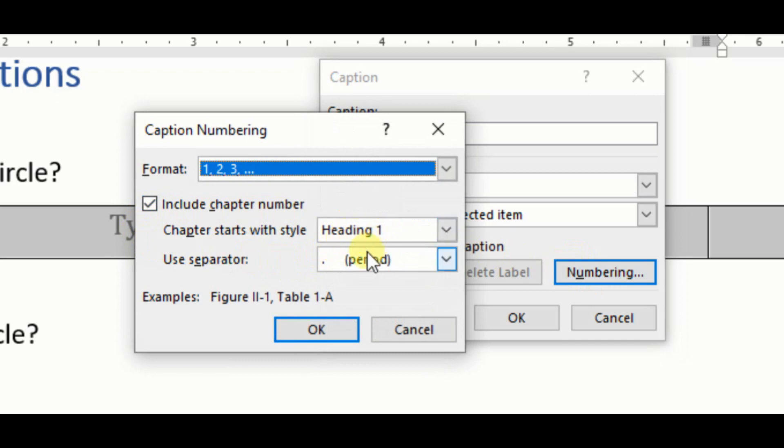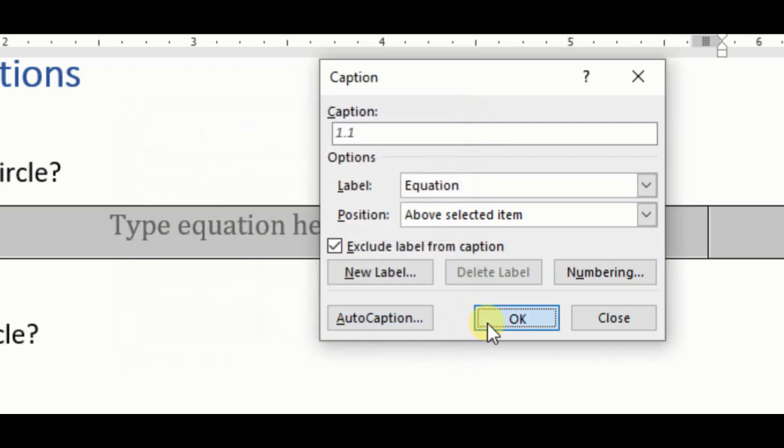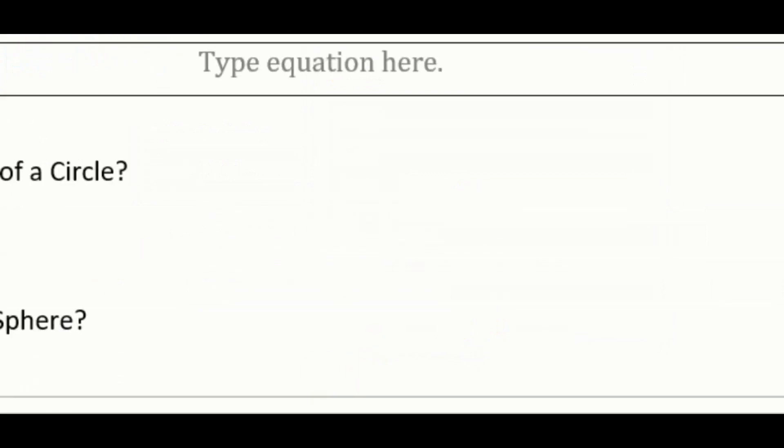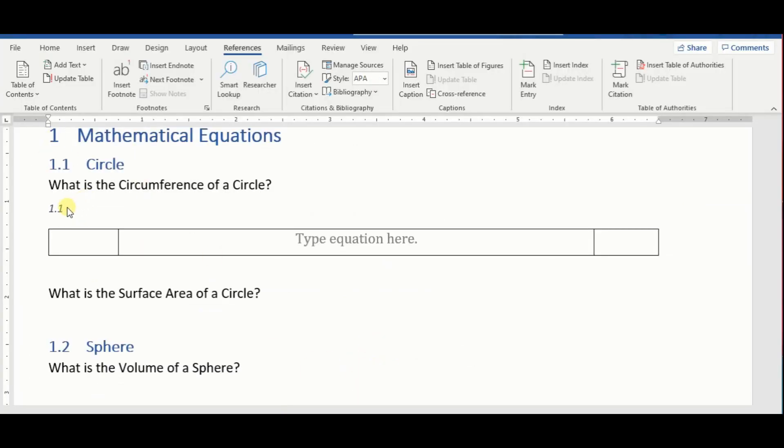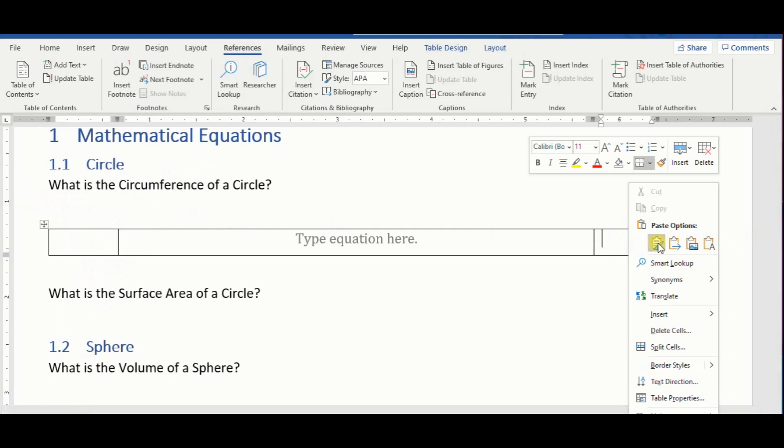Leave heading one, and for use separator, you can leave period. Click on okay, then okay. Now you have the equation number right here, so we're gonna select that, copy it, or cut it, and then paste it where we want it to be.